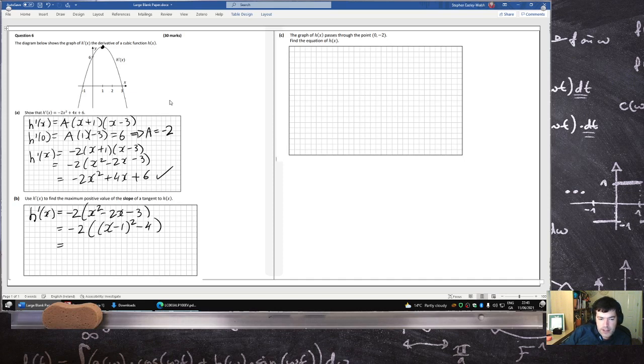So that will be 8 minus 2 times x minus 1 squared. So the maximum h derivative can be is 8, and this happens when x is 1. And so that's the maximum slope of the tangent.